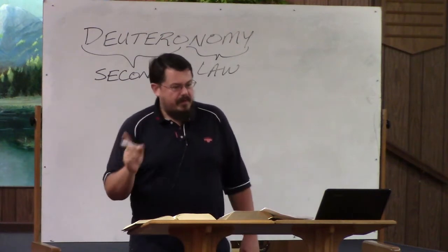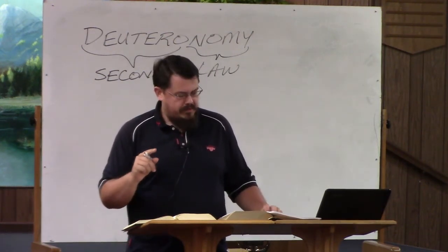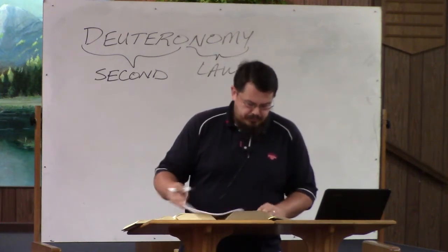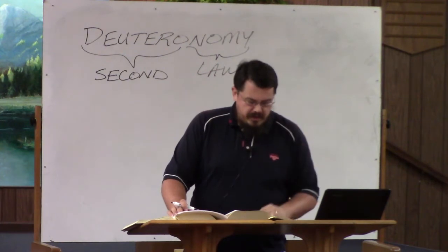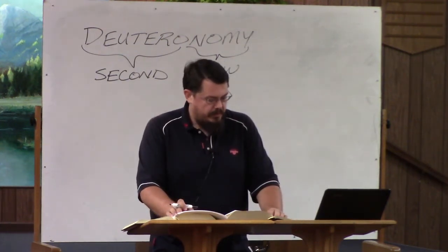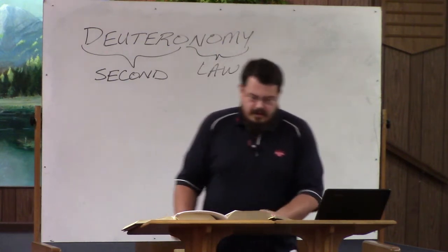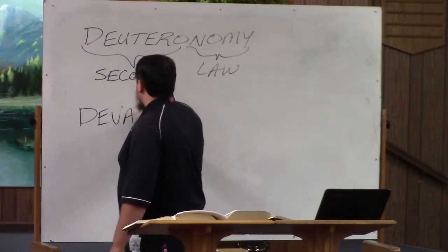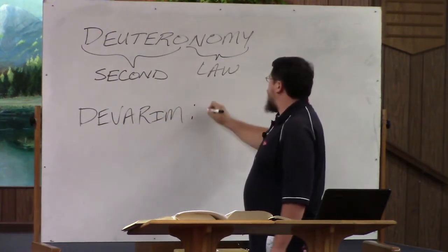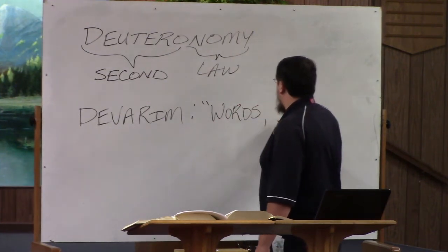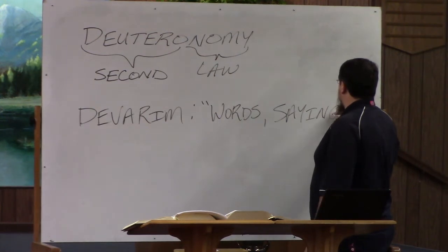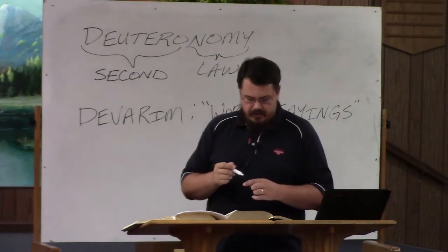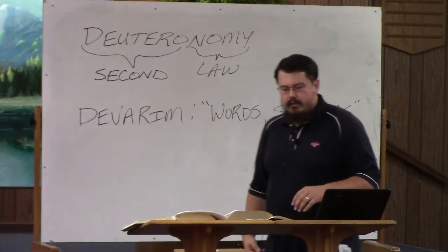The Hebrew name — remember, how do we get the Hebrew names of the books? Usually from the first words. In Hebrew, looking at Deuteronomy 1:1 in English: "These are the words that Moses spoke to all Israel beyond the Jordan in the wilderness." In Hebrew, one of the first words — I think the second — is Devarim, which just means words or sayings. Devar is a very generic word in Hebrew; it can even just mean things.